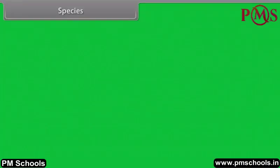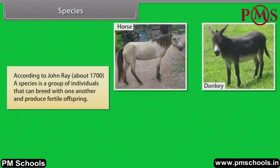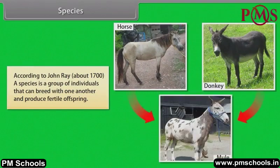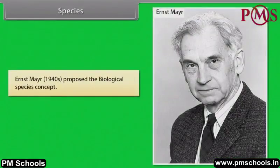According to John Ray, around 1700, a species is a group of individuals that can breed with one another and produce fertile offspring. Ernst Mayr, in the 1940s, proposed the biological species concept.